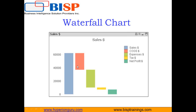Why use a waterfall chart? A waterfall chart is normally used for understanding how an initial value is affected by a series of intermediate positive or negative values. Usually the first and last columns are represented by whole columns — as you can see, sales and net profit are presented as whole columns — while the intermediate values like COGS, expenses, and tax are represented by floating columns.